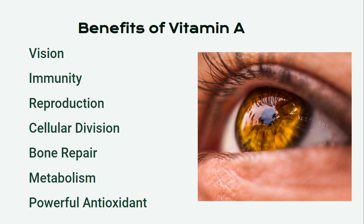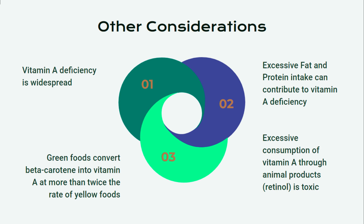Vitamin A functions as an antioxidant and has been called the most potent scavenger of free radicals in the body. It is widely accepted that vitamin A neutralizes the effects of air pollution in the mouth, throat, nose, and lungs. Vitamin A deficiency is widespread, and some nutritionists recommend 5–10 times the recommended daily allowance. Since vitamin A is consumed by the liver to process out excesses, a diet with too much fat and protein can cause deficiency. The first step to resolve deficiency is to reduce excesses in the diet, and the second is to supplement with whole foods rich in vitamin A. While both green and yellow foods are good sources of carotenes, green foods convert beta-carotene into vitamin A at more than twice the rate of yellow foods.